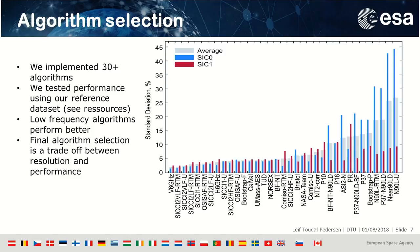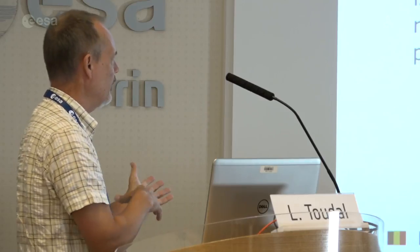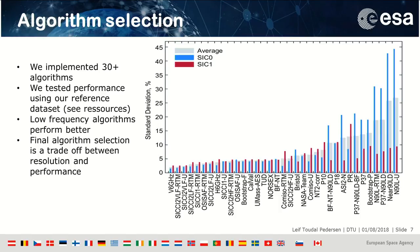In the ESA Climate Change Initiative project we searched the literature and found up to 30 different algorithms of similar nature — some more advanced, using more channels or dual polarization. We then ran an experiment comparing the performance of these different algorithms to identify the best one. The bar graph shows a listing of performance: the blue bar shows the standard deviation of retrieved ice concentration over open water areas, and the red bar shows it over 100% ice areas.